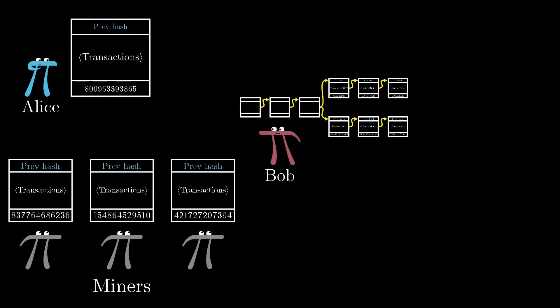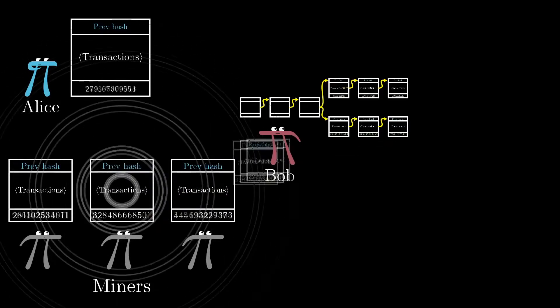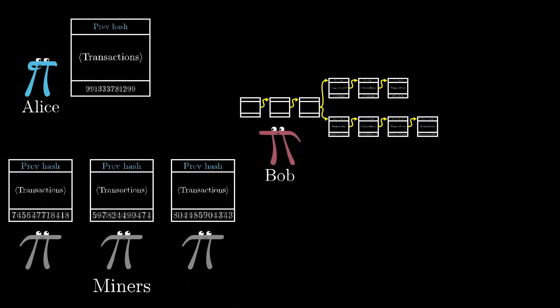Alice might be able to keep this up for a few blocks if, just by chance, she happens to find blocks more quickly than the rest of the miners on the network all combined.